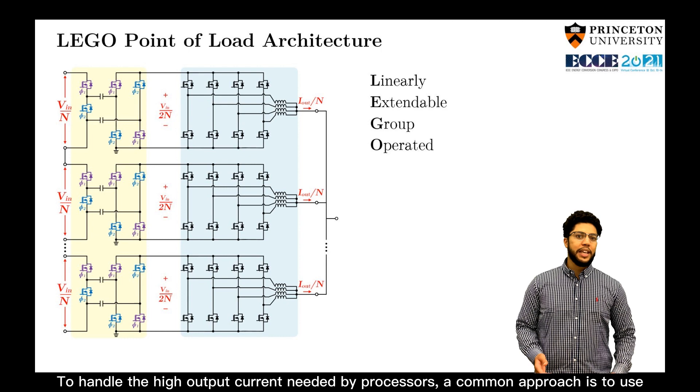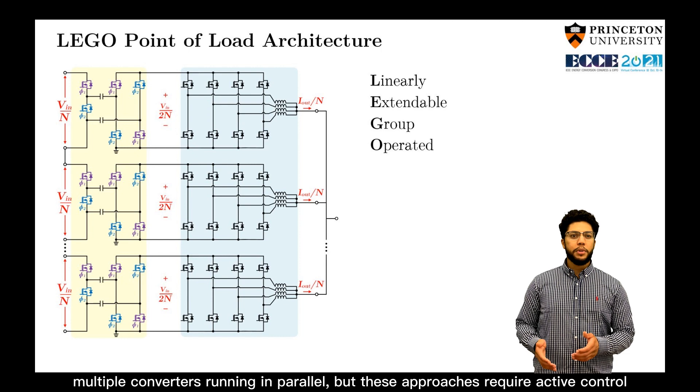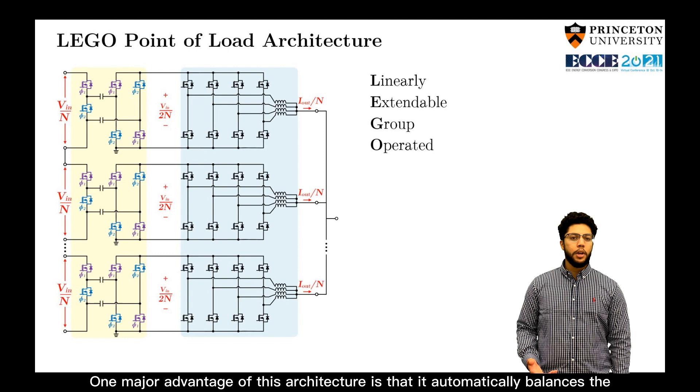To handle the high output current needed by processors, a common approach is to use multiple converters running in parallel, but these approaches require active control to guarantee that each converter delivers an equal amount of current.